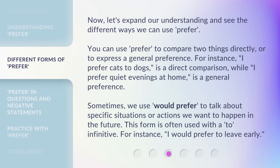Now, let's expand our understanding and see the different ways we can use prefer. You can use prefer to compare two things directly, or to express a general preference. For instance, "I prefer cats to dogs" is a direct comparison, while "I prefer quiet evenings at home" is a general preference.